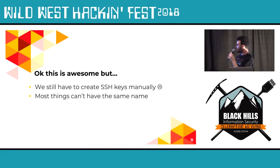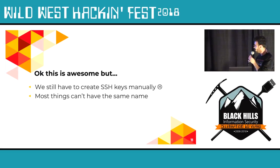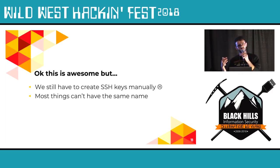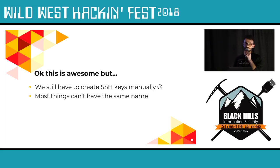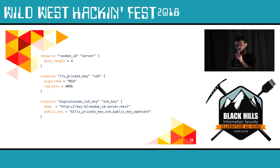We can now create resources on DigitalOcean with SSH keys. But the problem is we're using the built-in file function, which means we have to manually create the SSH keys before we run the script — which is bad because we want to automate all the things. Also, you can't have multiple objects in DigitalOcean with the same name, so you need a way to generate randomness in the name so that DigitalOcean doesn't come back and say this isn't going to work.